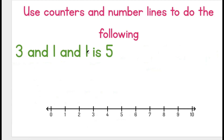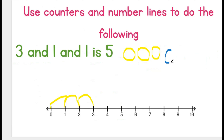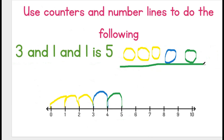Three and one and one is five. Let's draw this: one, two, three, then one, then one. We now have five circles and our answer on the number line is the number five. This means that three and one and one is five.